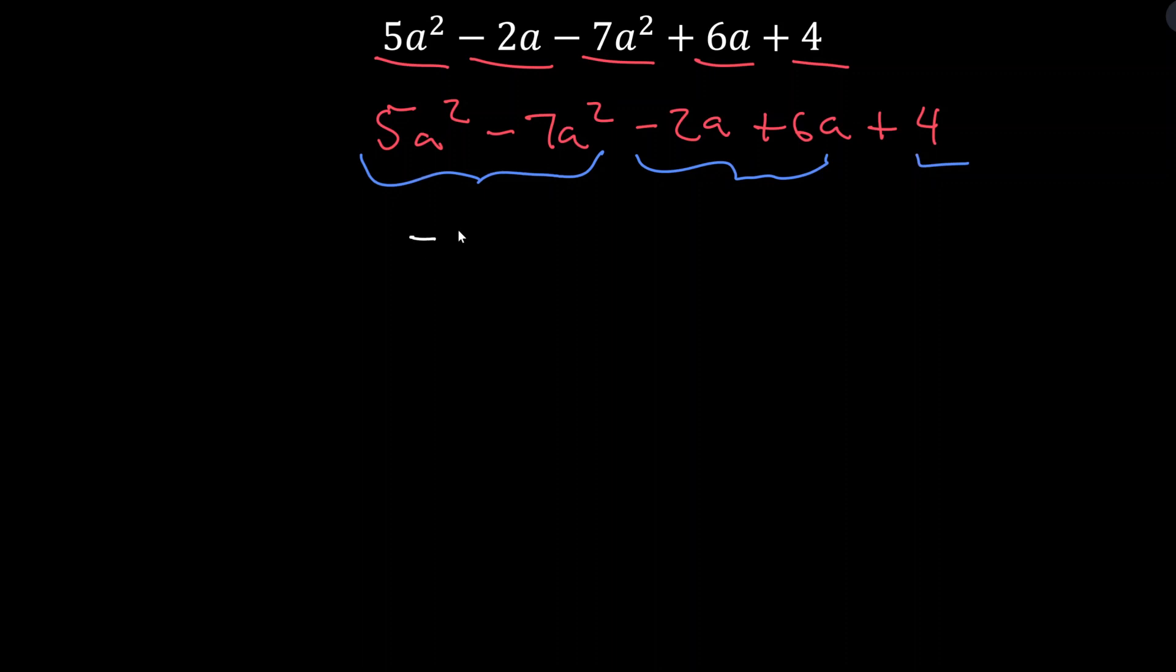And now we can see we have the a squared terms together, we have the a terms together, and we have the single constant term by itself. Now we can combine our like terms. 5a squared minus 7a squared is negative 2a squared. And then we have negative 2a plus 6a, that's going to become plus 4a. And then we're left with that plus 4 at the end. Now it's perfectly fine if you skip this rearranging step. But this is as simple as this algebraic expression will get.